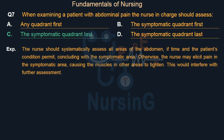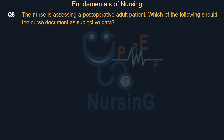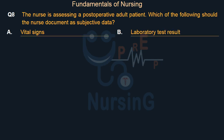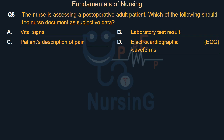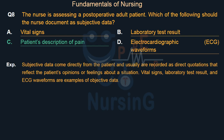The nurse is assessing a post-operative adult patient. Which of the following should the nurse document as subjective data? Option A: Vital signs. Option B: Laboratory test results. Option C: Patient's description of pain. Option D: Electrocardiographic (ECG) waveforms. The right answer is Option C: patient's description of pain. Subjective data come directly from the patient and are usually recorded as direct quotations reflecting the patient's opinions or feelings. Vital signs, laboratory results, and ECG waveforms are examples of objective data.